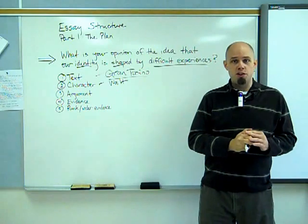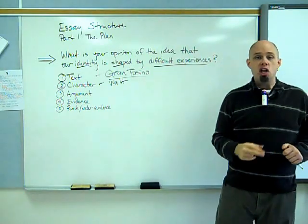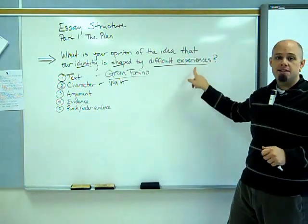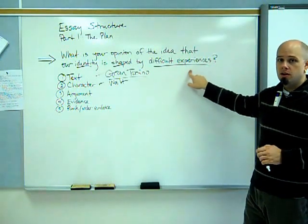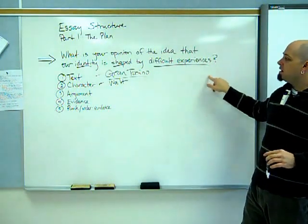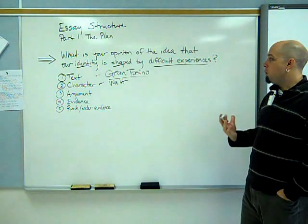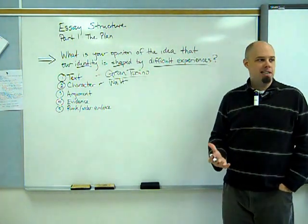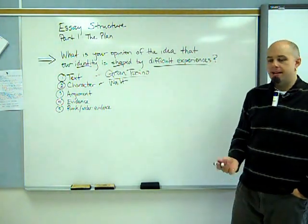Argument. So now that you've got the text and the character, you need to come up with an argument. This isn't an argument. This is a prompt. This is a question. And in this case, the argument is as simple as Walt's identity is shaped by difficult experiences. That's it.